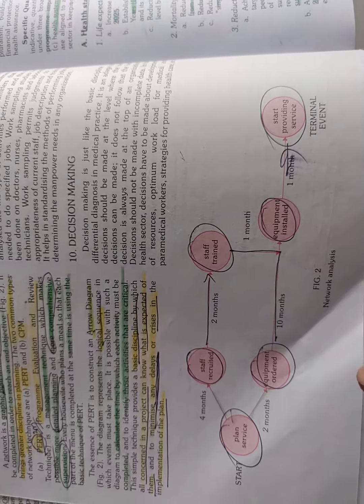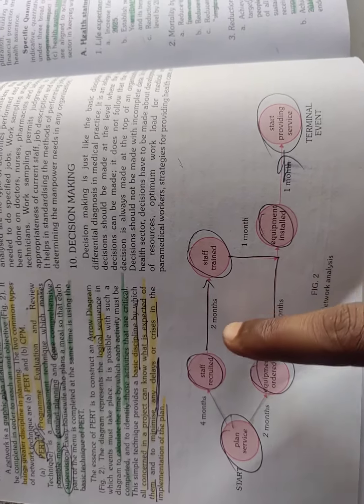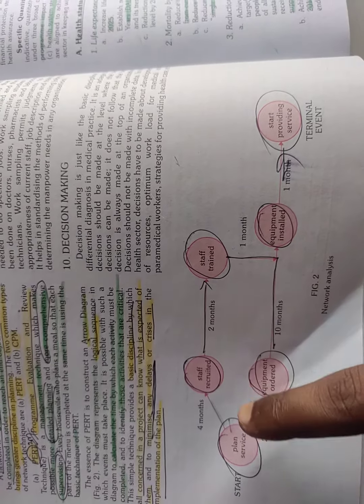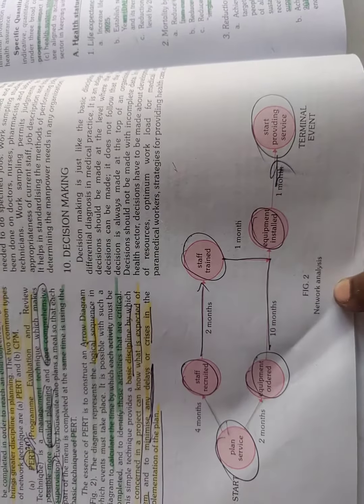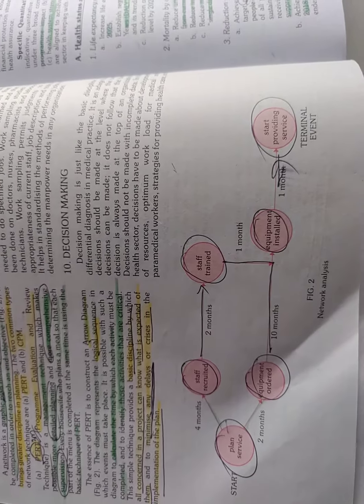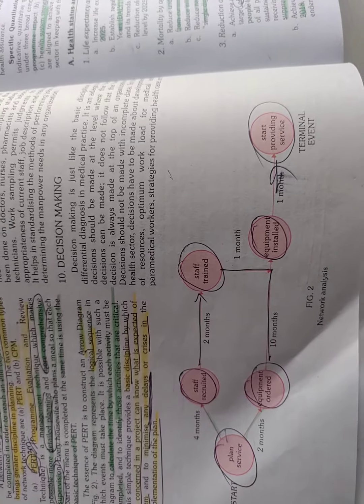In case of Program Evaluation Review Technique PERT, there is always arrow marks and there is a calculated time that should be completed within a time. Critical Path Method is the longest path in the network that is termed as Critical Path Method.